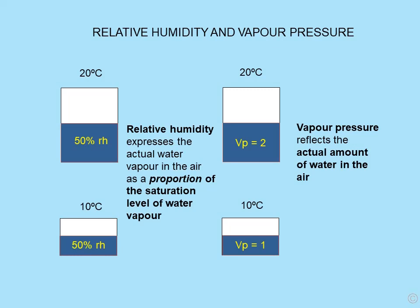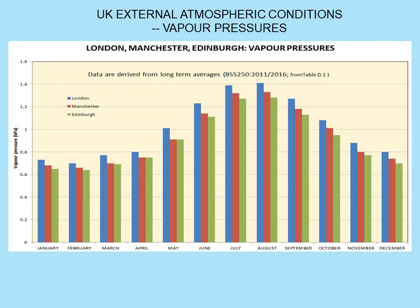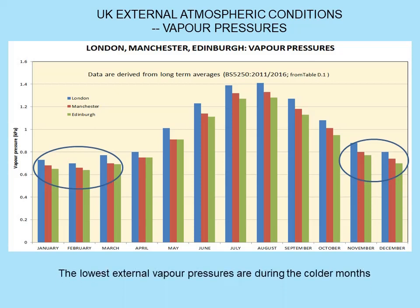If we increase the size of our bucket in the top diagram to ten times the size and put that amount of water into this much larger bucket, there will still only be two units of water. It's also interesting to see external atmospheric vapour pressures. Note that in the colder months of the year, vapour pressures are much lower than in the summer months. On a cold frosty day, we could be looking at vapour pressures in the order of four and a half to five kilopascals. So in the colder months, the external vapour pressure is much lower — in other words, the air is drier.